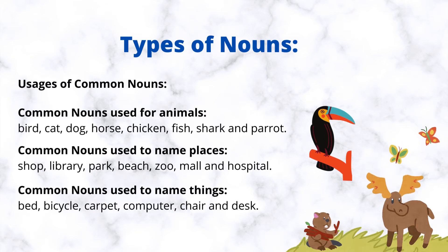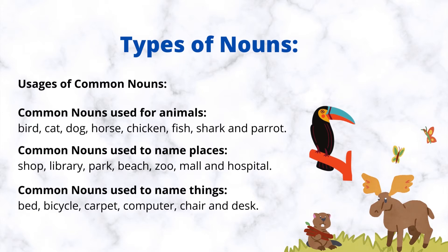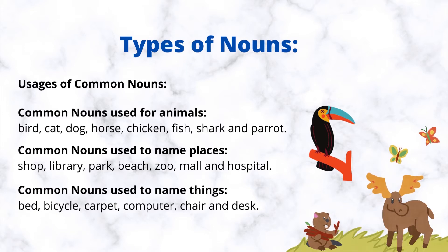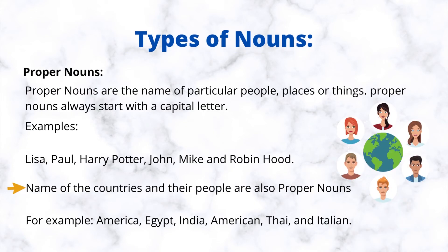Common nouns used to name things: bed, bicycle, carpet, computer, chair, and desk. Proper nouns are the name of particular people, places, or things.